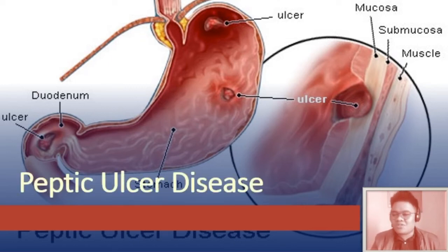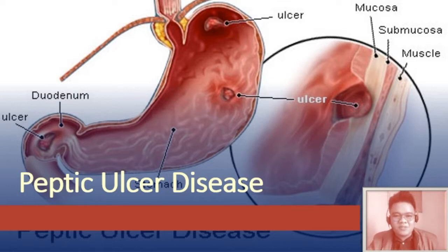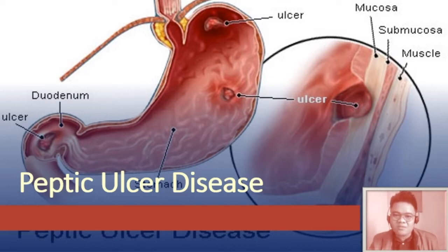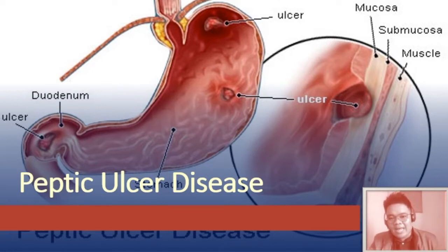In this discussion, we will be talking about peptic ulcer disease. When I say peptic ulcer disease, it is a sharply defined break in the continuity of the tissue that involves the mucosa, submucosa, and muscular layers of the digestive tract that is related to the exposure of hydrochloric acid and pepsin.